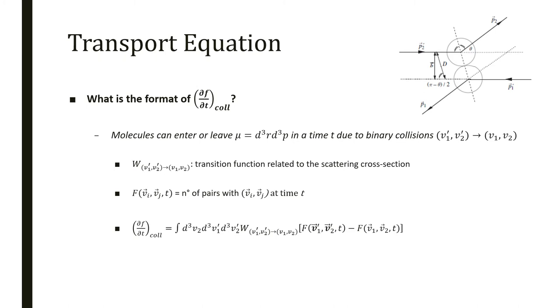Our next question is, what is the format of this term related to collisions? Molecules can enter or leave this volume in phase space due to binary collisions. Let's treat it as entering with velocities v1' and v2', colliding and leaving with velocities v1 and v2. We can solve this using scattering theory. We define a transition function W related to the scattering cross-section and function F of vi and vj related to the number of pairs at time t.